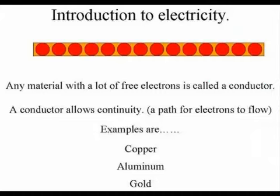A conductor is any material that has a lot of free electrons in it, willing to move around. Some examples of good conductors are copper, aluminum, and gold.